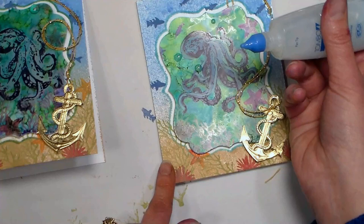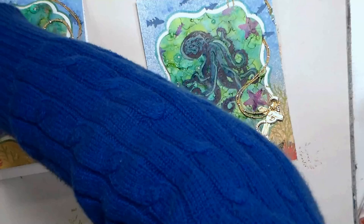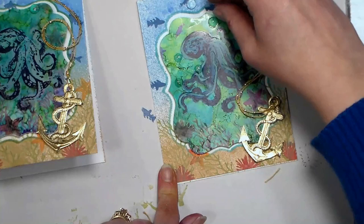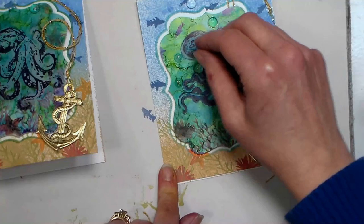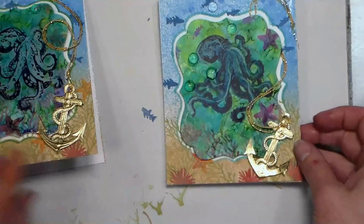The other embellishment I decided to add were some little clear gems that can be found in the floral section of your craft store. You get a humongous bag, like a lifetime supply for you and your friends for like a couple dollars, but they're really great for adding little bubbles on nautical cards or even coloring with your alcohol markers or alcohol inks and using them for flower centers or dew drops or whatever you want. They're just really fun. I think they're just called like clear acrylic gems or something, but they're right in the floral section of Michael's or Joann's or even on Amazon I'm sure.